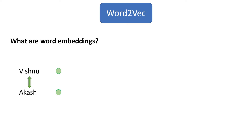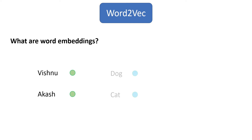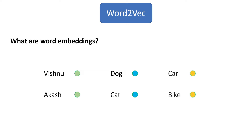Let's say we have two more words, which are dog and cat. Obviously, they are related to each other, so they should get similar weightage. Similarly, car and bike.